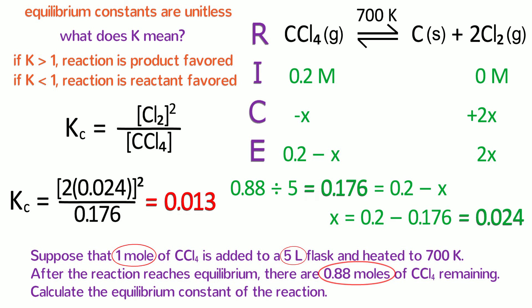Does this number make sense? Yes, the concentration of reactants is larger than the concentration of products at equilibrium, so an equilibrium constant less than 1 makes sense. Okay, let's try one more equilibrium problem.